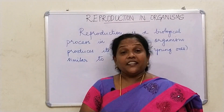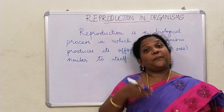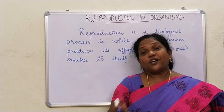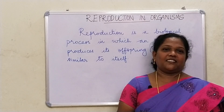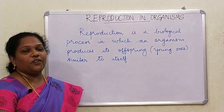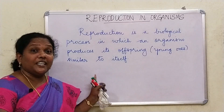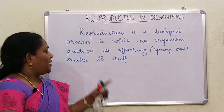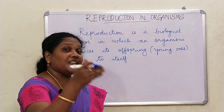Reproduction also enables the continuity of the species, from generation to generation, from parents to the offspring, from first generation to second generation. What helps in transmitting the characters from one generation to another? Genes. The offspring, also called progeny, are similar to the parent. The offspring grows, develops, matures, and produces its own offspring.